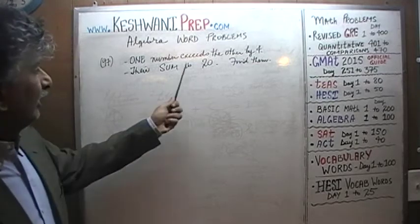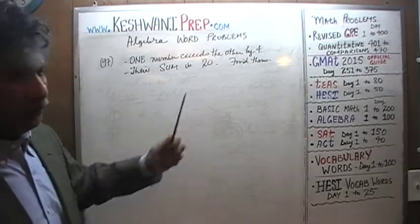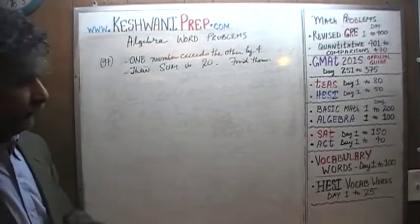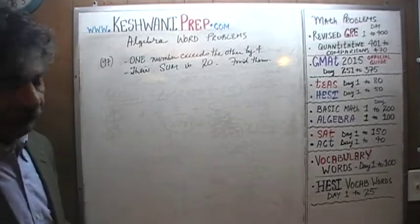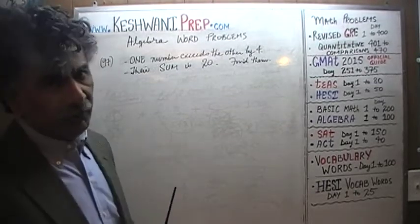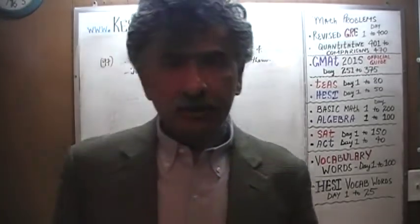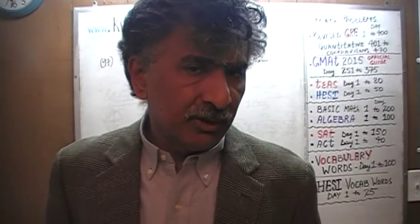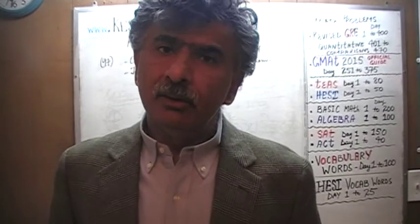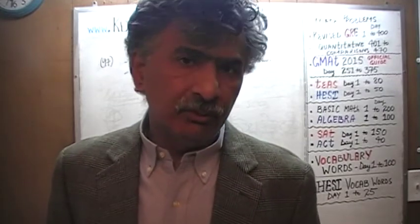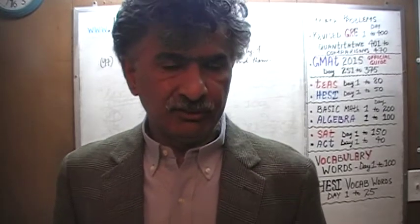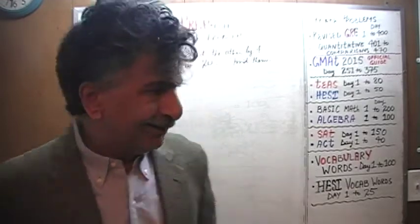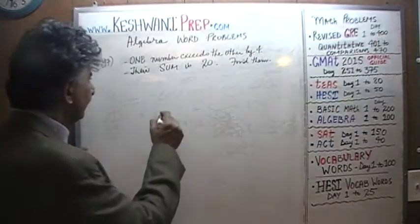We are told that one number exceeds the other by 4. We are also told that their sum is 20. Find them. There are two ways we can go about solving this problem. One is what is known as the substitution method. The other one is what is known as the simultaneous equation method. Let's do the simultaneous equation method first.